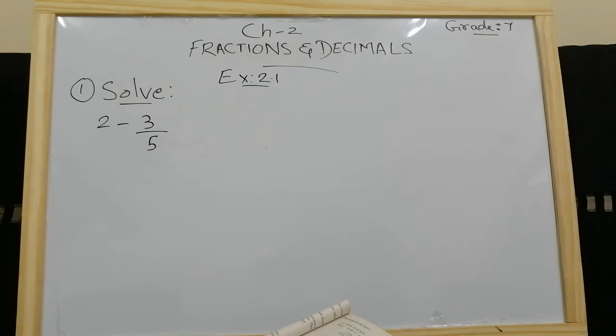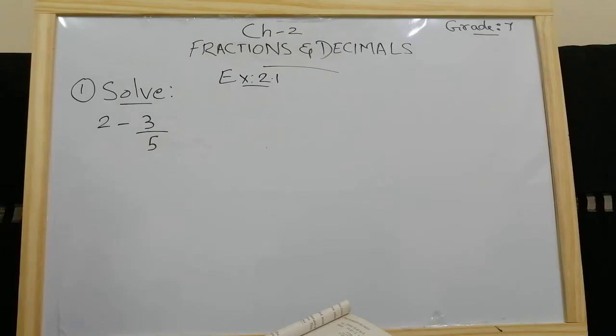Let's begin the chapter Fractions and Decimals. As per the textbook, your first exercise will be 2.1, and this is your first question which I have already written on the board.